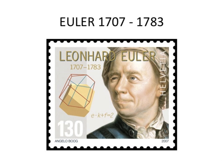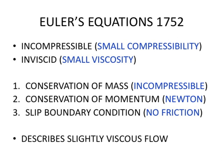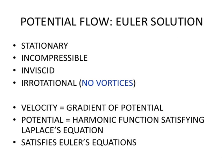D'Alembert found his paradox by analysing certain solutions to the Euler equations describing slightly viscous, incompressible flow, formulated by Euler in 1752. D'Alembert considered so-called potential solutions, which are time-independent solutions with the flow velocity being the gradient of a potential satisfying Laplace's equation, thus a harmonic function. A potential solution satisfies the Euler equations, expressing incompressibility and Newton's second law, and a slip boundary condition at a solid wall, as a model of the small friction of slightly viscous flow.